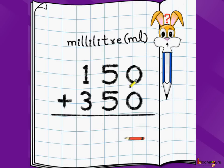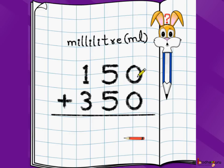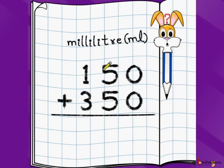Let's take a milliliter example. Let's say we have 150 milliliters plus 350 milliliters and we need to find the sum. We write 150 milliliters on top, plus 350 milliliters below it, draw an underline, and then start doing addition similar to three-digit addition, starting from the ones position going left. So 0 plus 0 is 0.